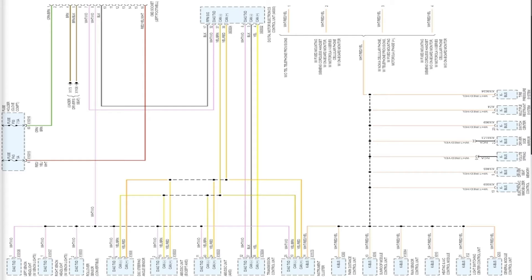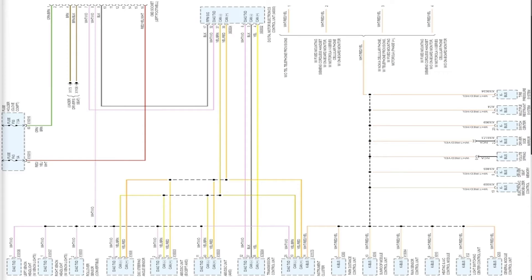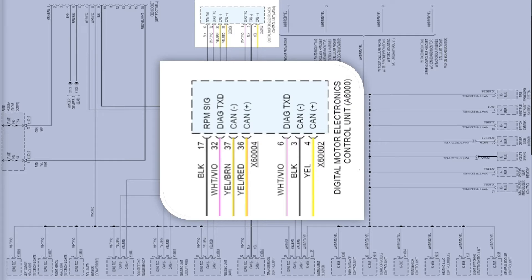I rotated this diagram to get the whole thing on the screen. The DLC is in the top left of the diagram. The DME is just to the right of the data link connector. There are just two sets of CAN lines and two Diag TXD lines. The CAN lines do not go to the DLC — these are used for module-to-module communication only and not for scan tool communication.